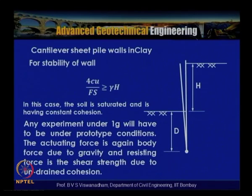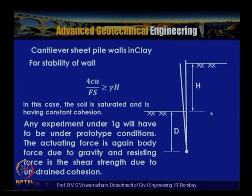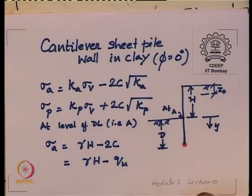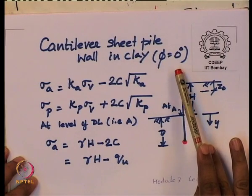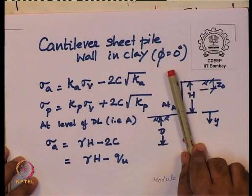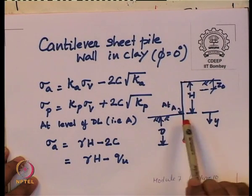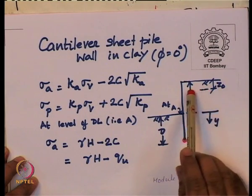Now consider stability of cantilever sheet pile walls in clay. Both on the dredging side and the retention side we have clay. The dredge level is indicated as point A, with d as the embedded depth and h as the retaining height. Let us look at how the stability expression is obtained through a detailed analysis of the cantilever sheet pile wall in clay where phi equals 0.